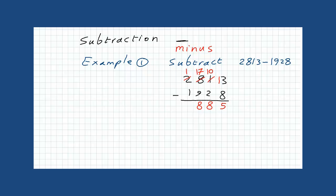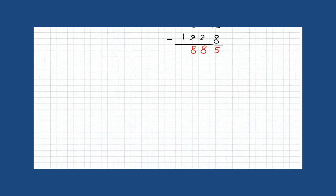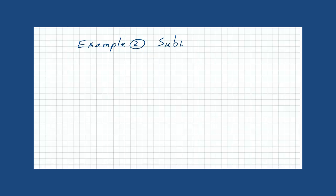Now look at the next example. Subtract 349 from 2702. This question, you must be careful when you solve it, because you must put the number that comes after from first. So we must write 2702 minus 349.